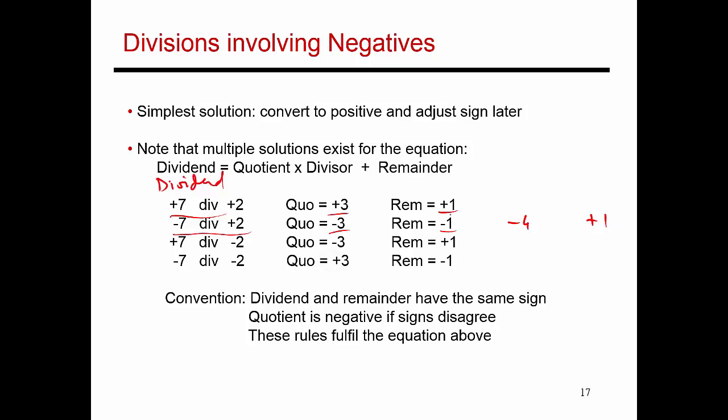So you'll see that the remainder here has the same sign as the dividend, same thing over here and over here. If the signs of the divisor and the dividend disagree, then the quotient is going to be negative. So in these two cases, the signs disagree, so the quotient is negative in these two cases.